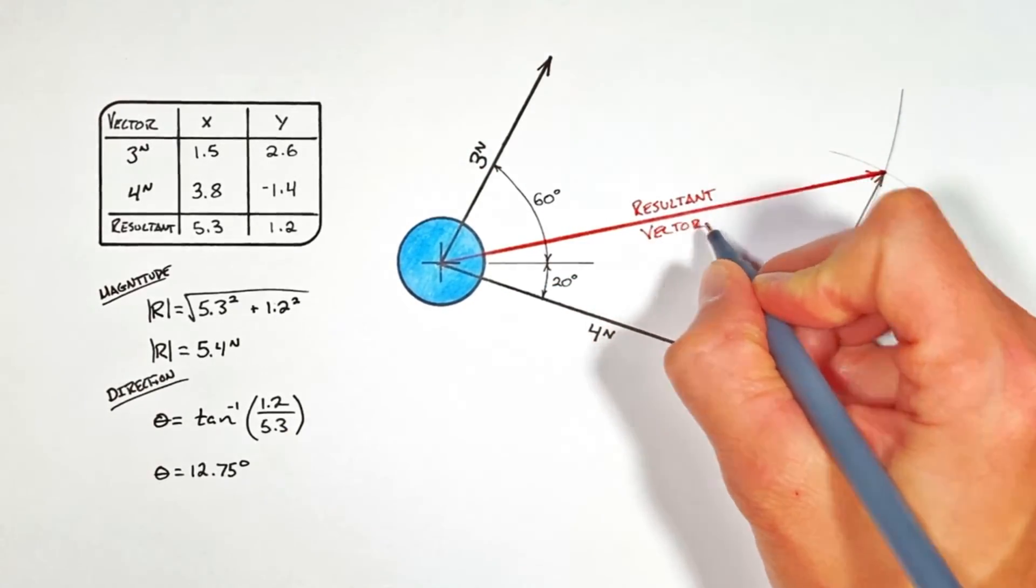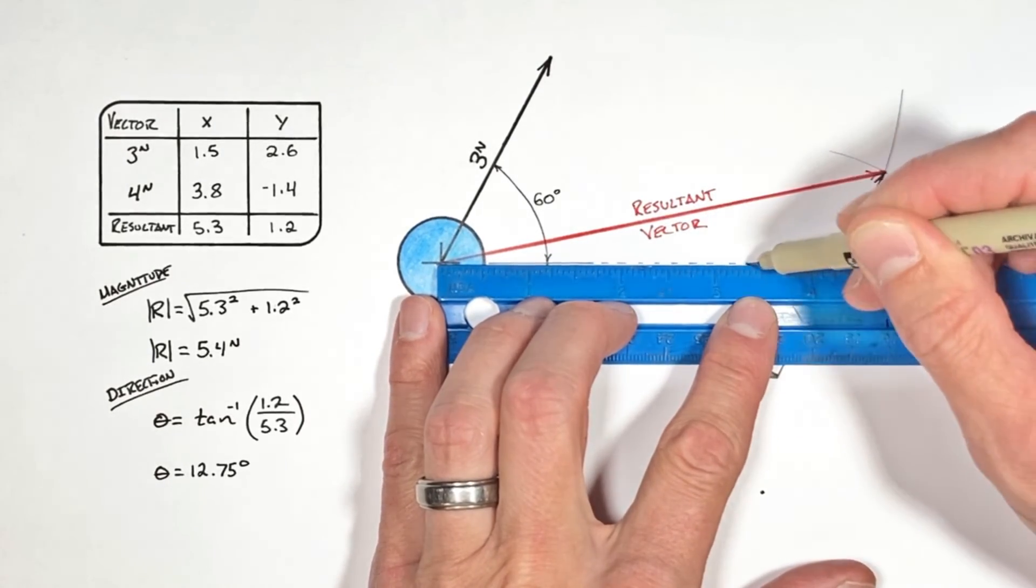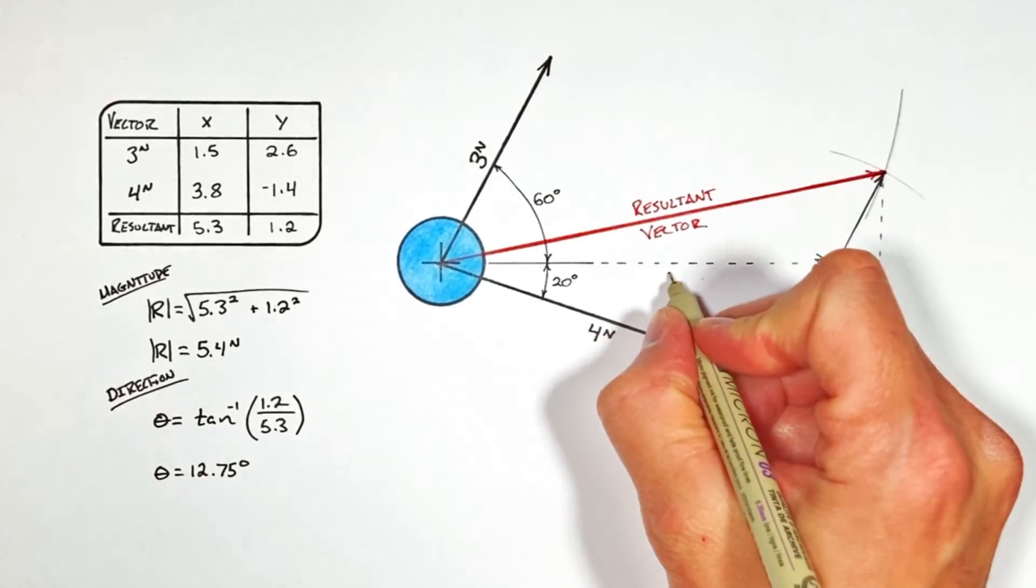And if done correctly, you'll see that the horizontal and vertical components of our resultant vector, which we drew from the tip-to-tail method, matches the horizontal and vertical components which we solved for mathematically.